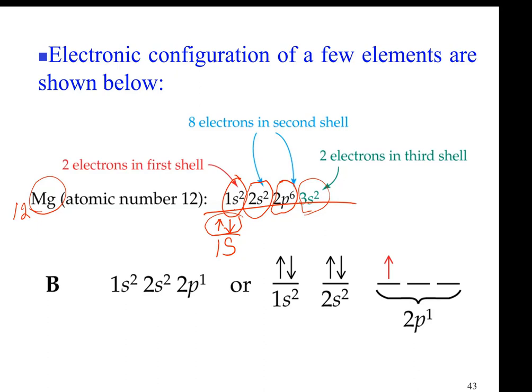Pairing electrons with opposite spin is more stable because when electrons are spinning, they produce magnetic fields. When the directions of spinning are opposite, you have two opposite magnetic fields — like two opposite ends of a magnet bar, which attract each other. That attraction brings stability, and stability means less energy content.